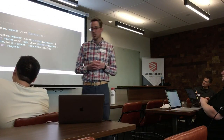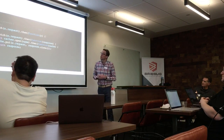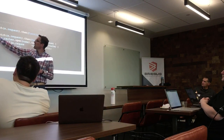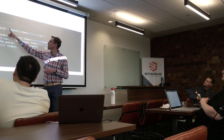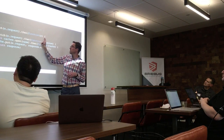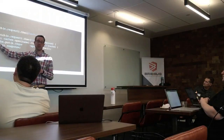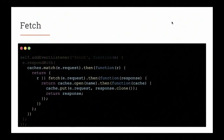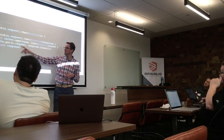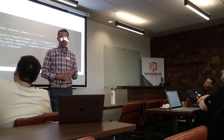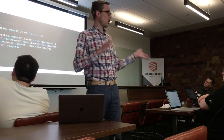Here's the code: using caches.match with the request — if I've got a response, return it if truthy. If falsy or undefined, go ahead and do the actual fetch. When that response comes back, open the cache, put the request and a clone of the response into it, then return the response. This is where we're serving as a man in the middle, caching all responses that come through.